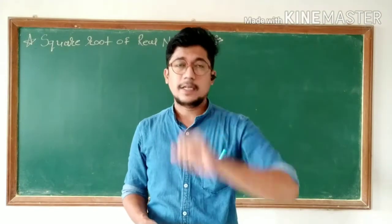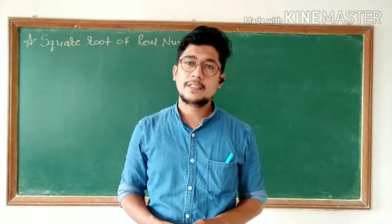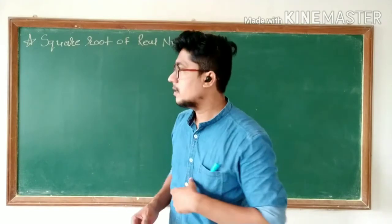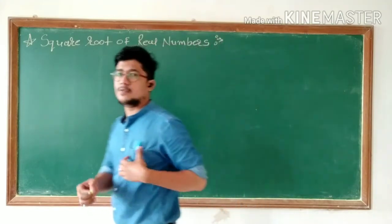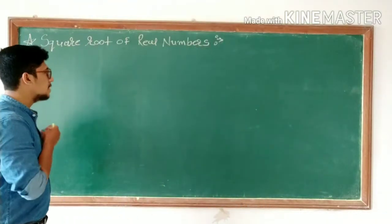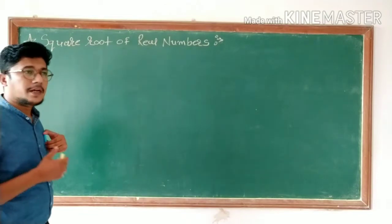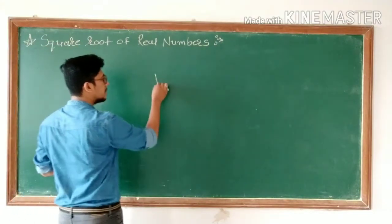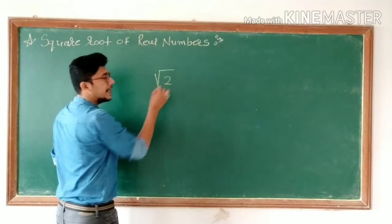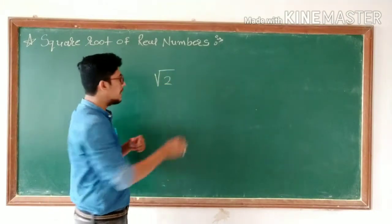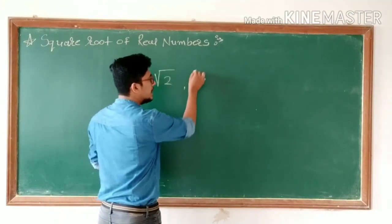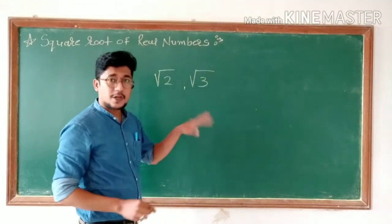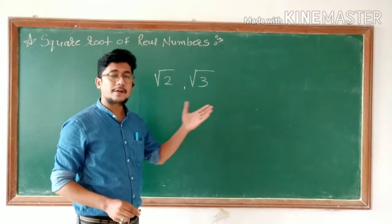Good morning students. In our last online session, we completed square root of positive integers. We learned that square root of positive integers like square root of 2, square root of 3, square root of 4, square root of 5 can be presented on the number line.